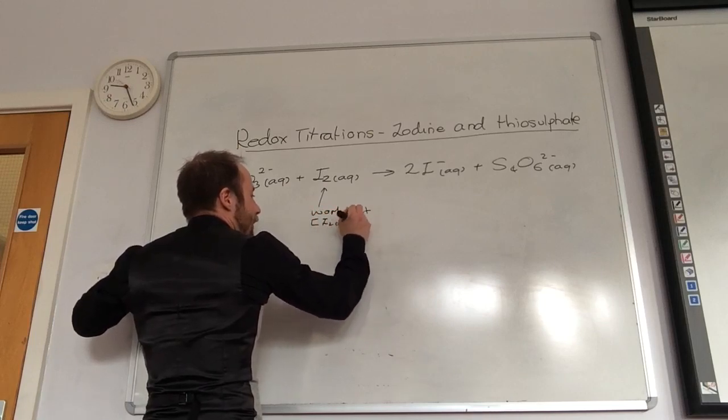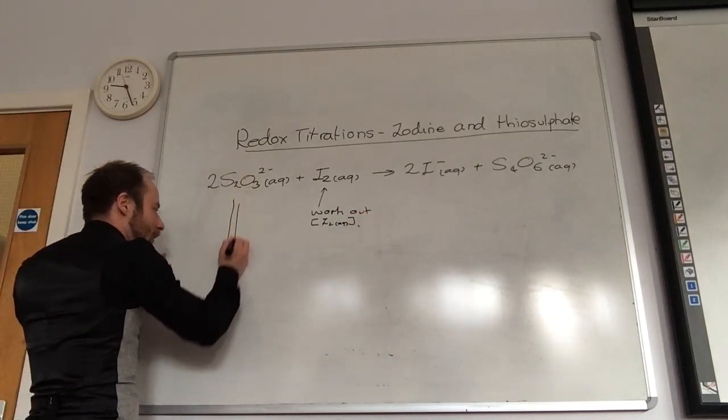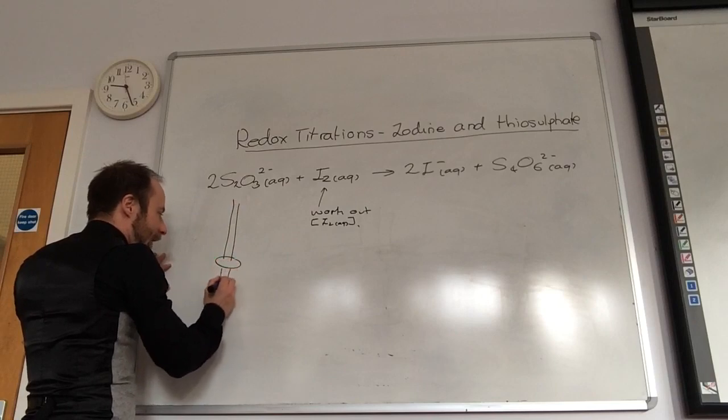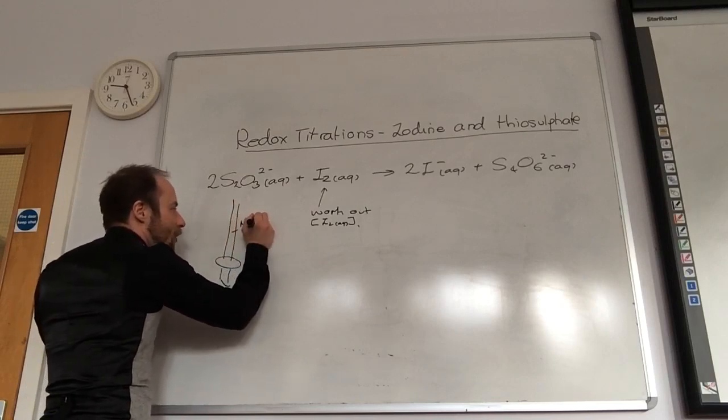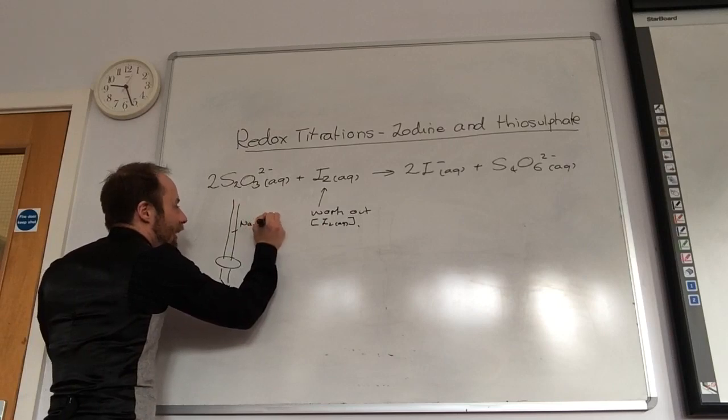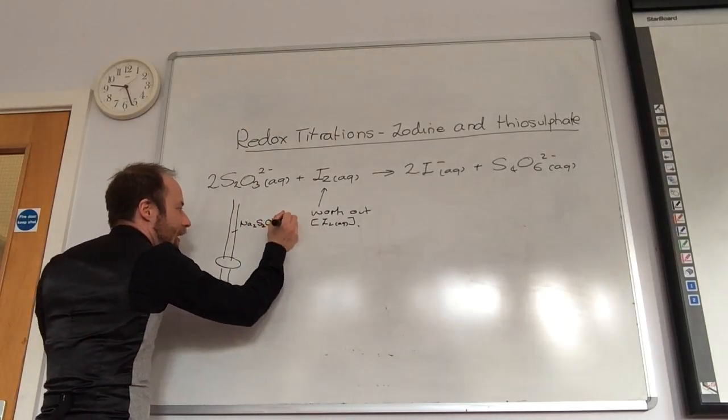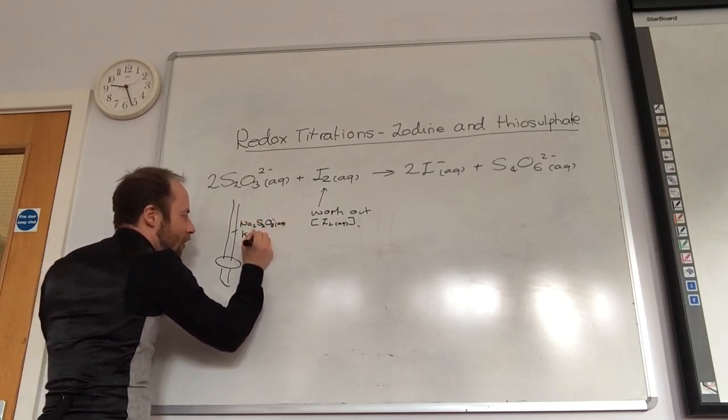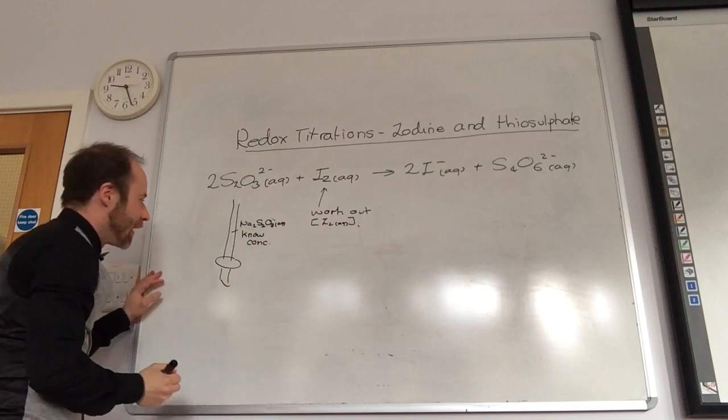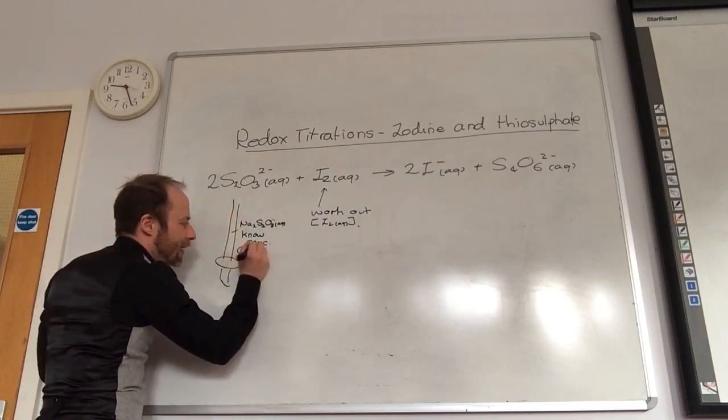You need to know this one. Generally, although it may vary, your thiosulfate, normally sodium thiosulfate which is Na2S2O3, you know that concentration. That goes in your burette, and that is colorless.